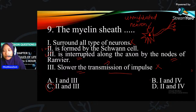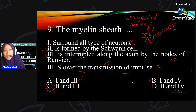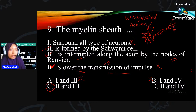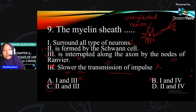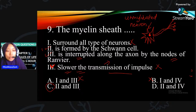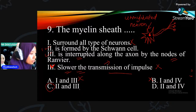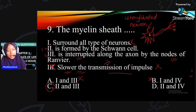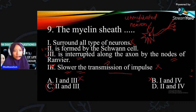Statement: it lowers the transmission of impulse - adakah betul? Salah. So tak semua neuron ada myelin sheath - ini salah. Myelin sheath is formed by Schwann cell - nombor 2 betul. Pilihan jawapan antara C dengan D. Adakah it lowers the transmission of impulse? Salah. Jawapan dia C.